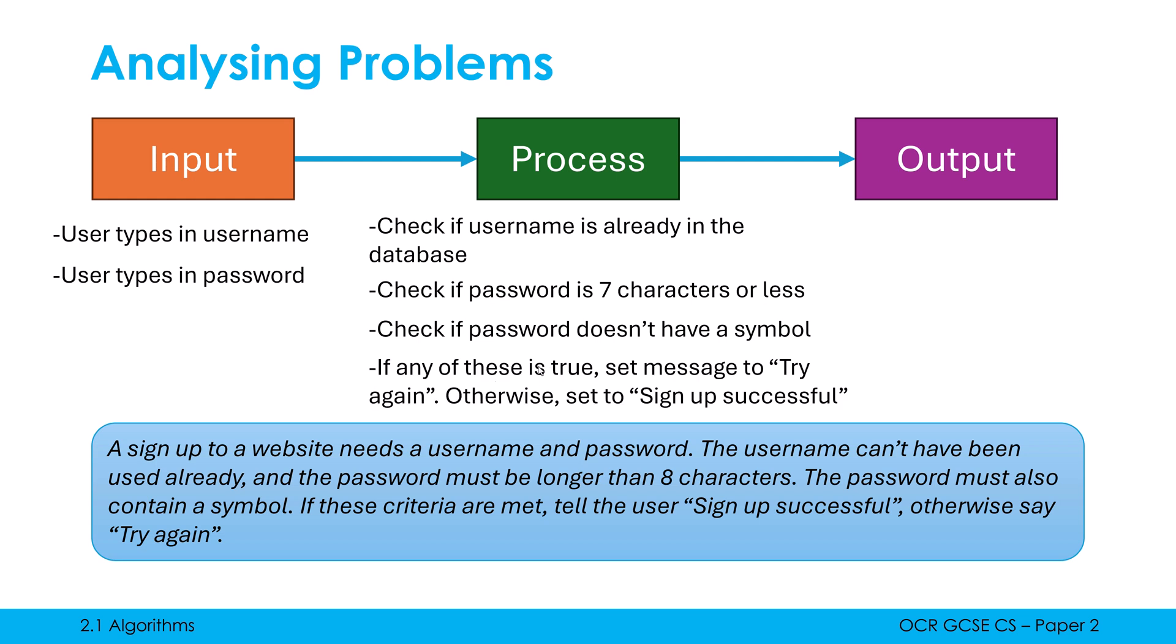in a negative sense, because if any of these checks happens to be true, that's a bad sign. I need to set my message to be try again. I'm not outputting that message yet, that's the job of the output code. I'm just setting the message to be try again. Otherwise, if these are false, then we can set it to be sign up successful.